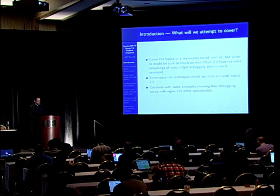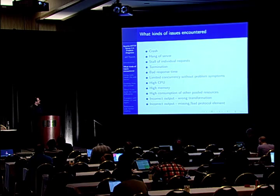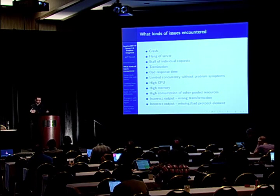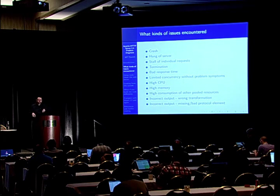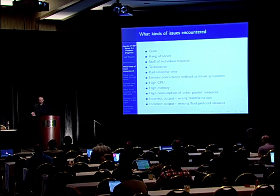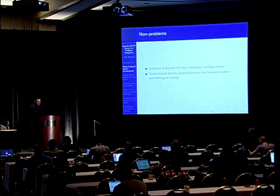A lot of things we're going to talk about are basic 2.4 capabilities out of the box. Problem symptoms include crashes, server hangs, certain requests hanging, things terminating abruptly, bad response time, high resource consumption, bad output — all the kinds of things that make you want to look at logs and look inside the server.